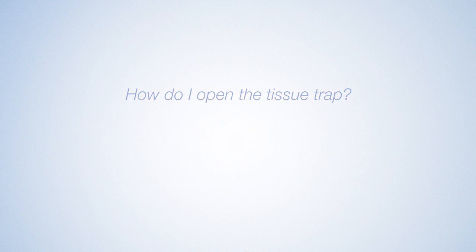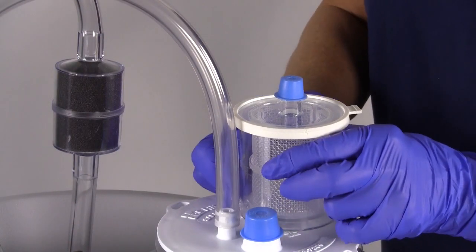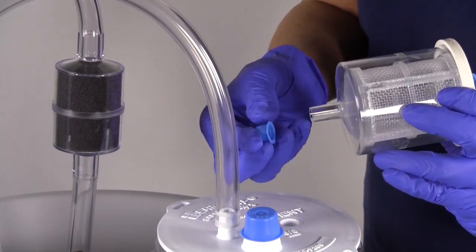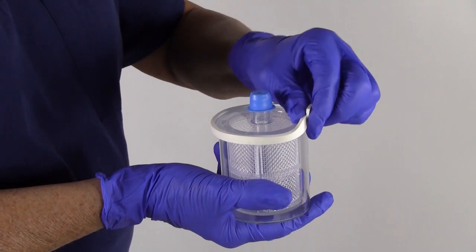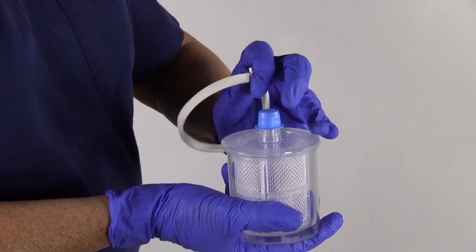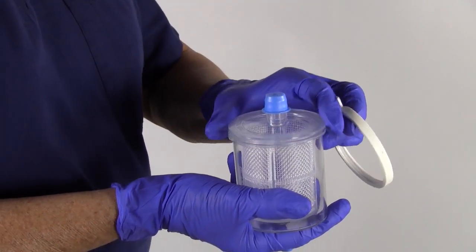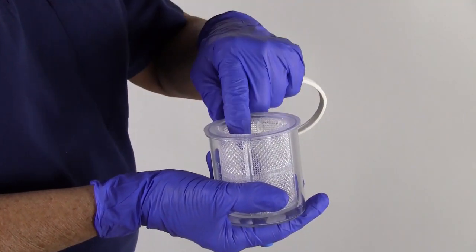How do I open the tissue trap? Once the trap is drained, lift it off the lid at a slight angle and place a small cap onto the bottom port. Pull the tab to loosen the seal and peel the seal away from the lid. Once the seal is removed, it cannot be replaced.